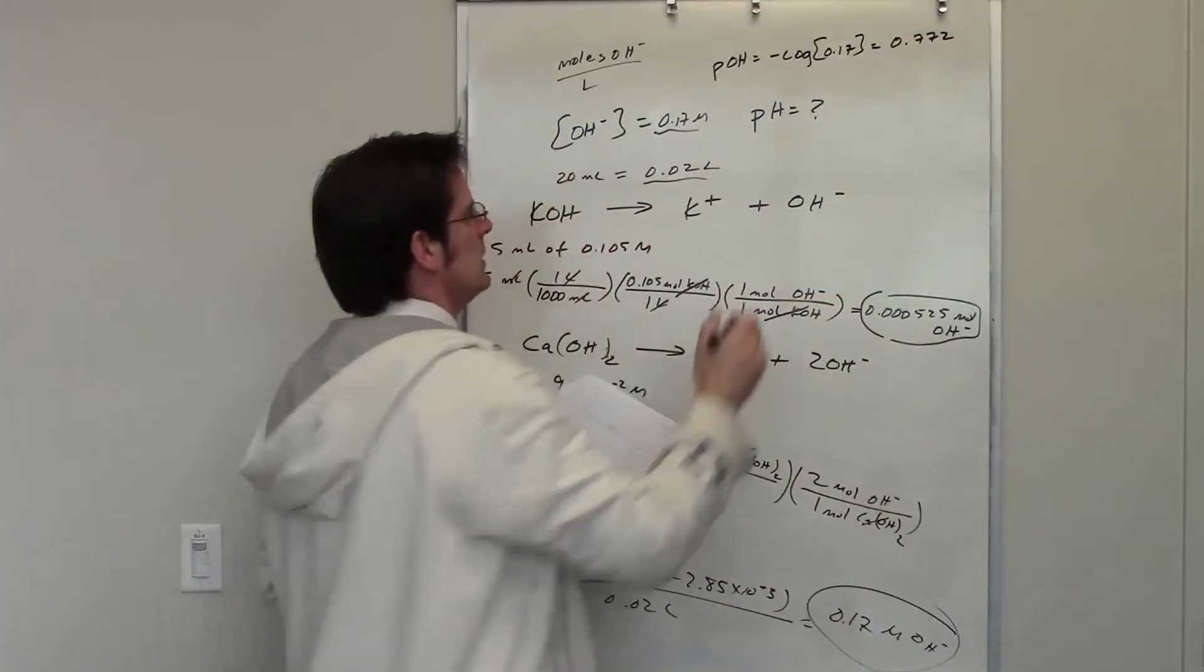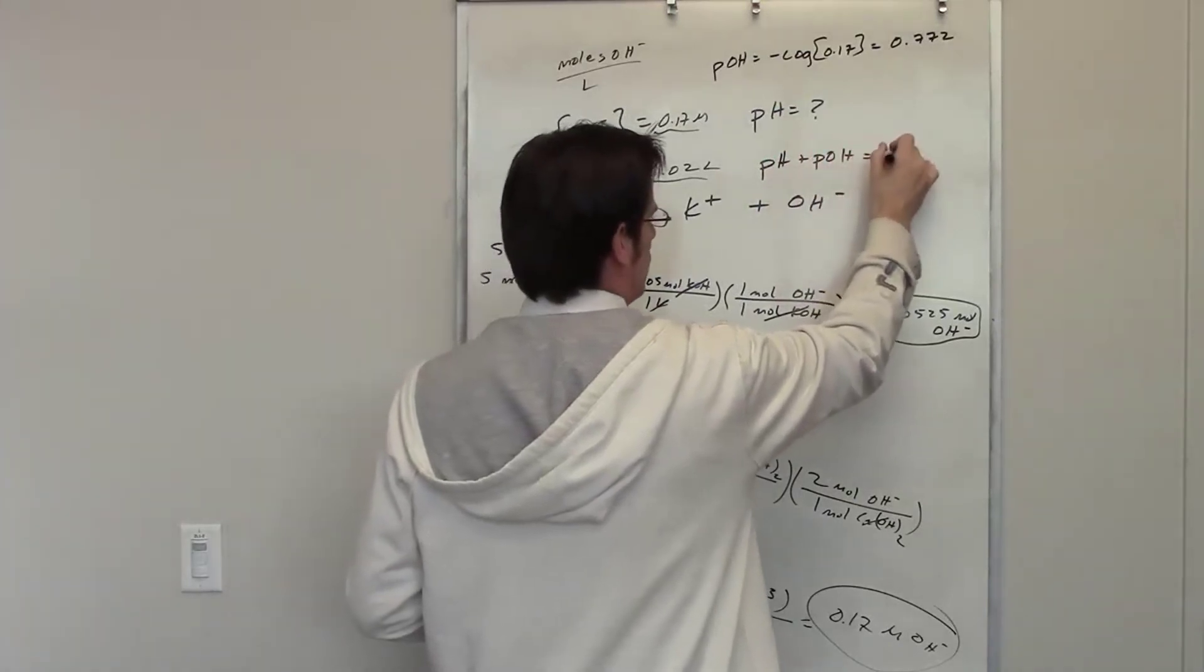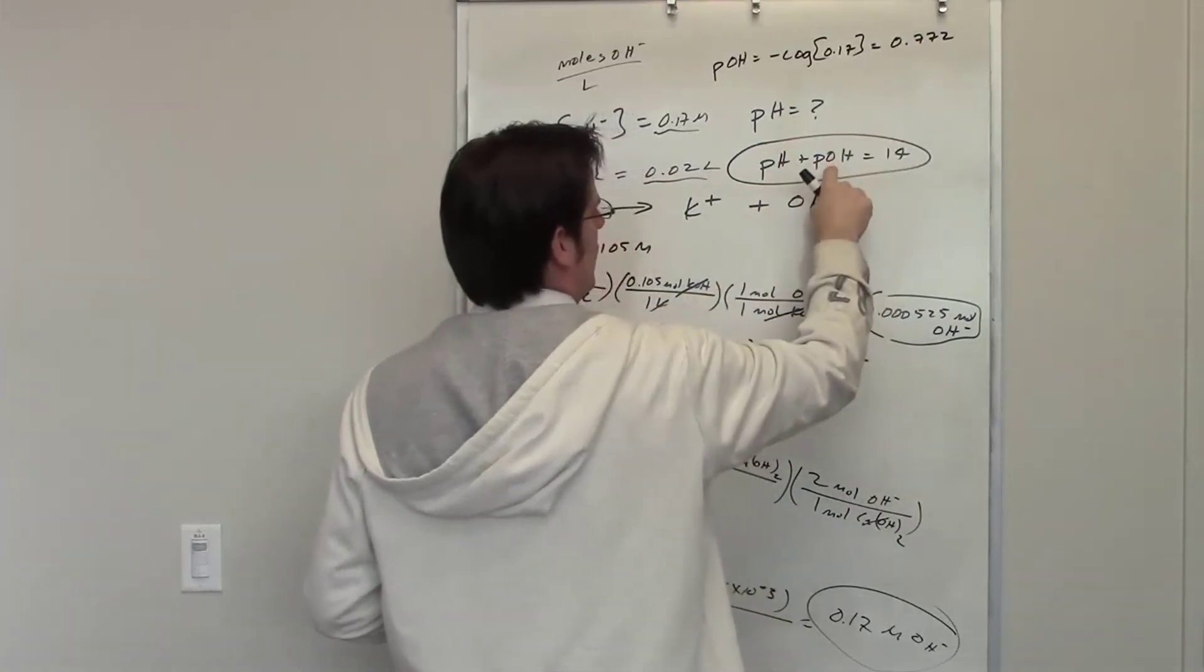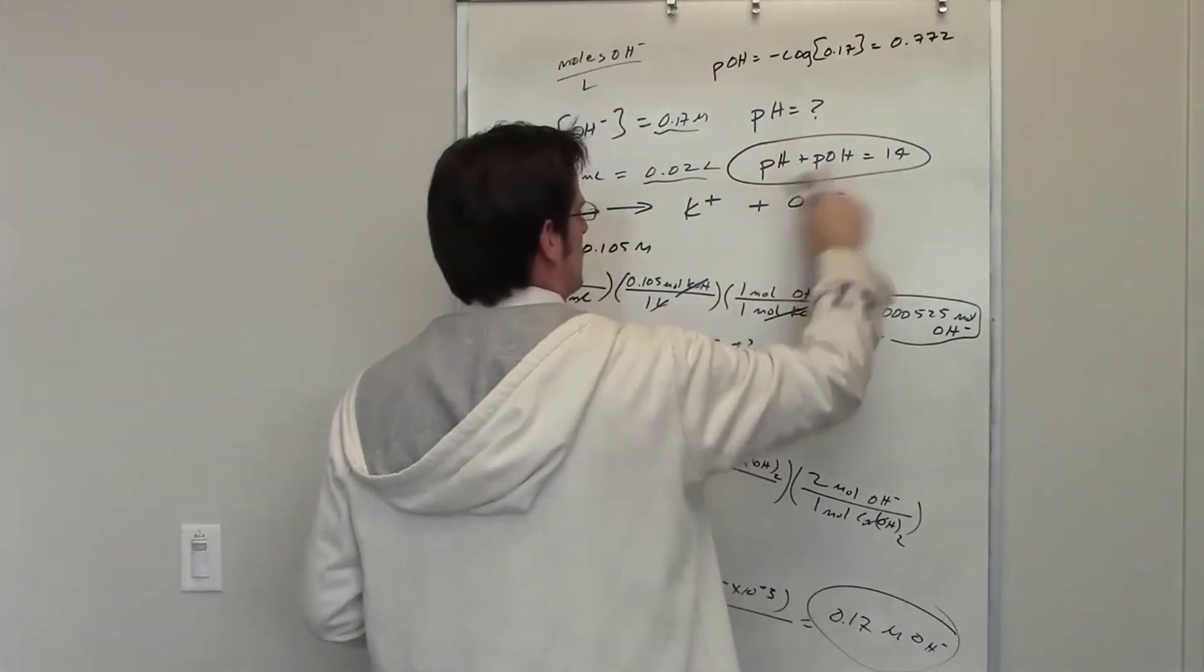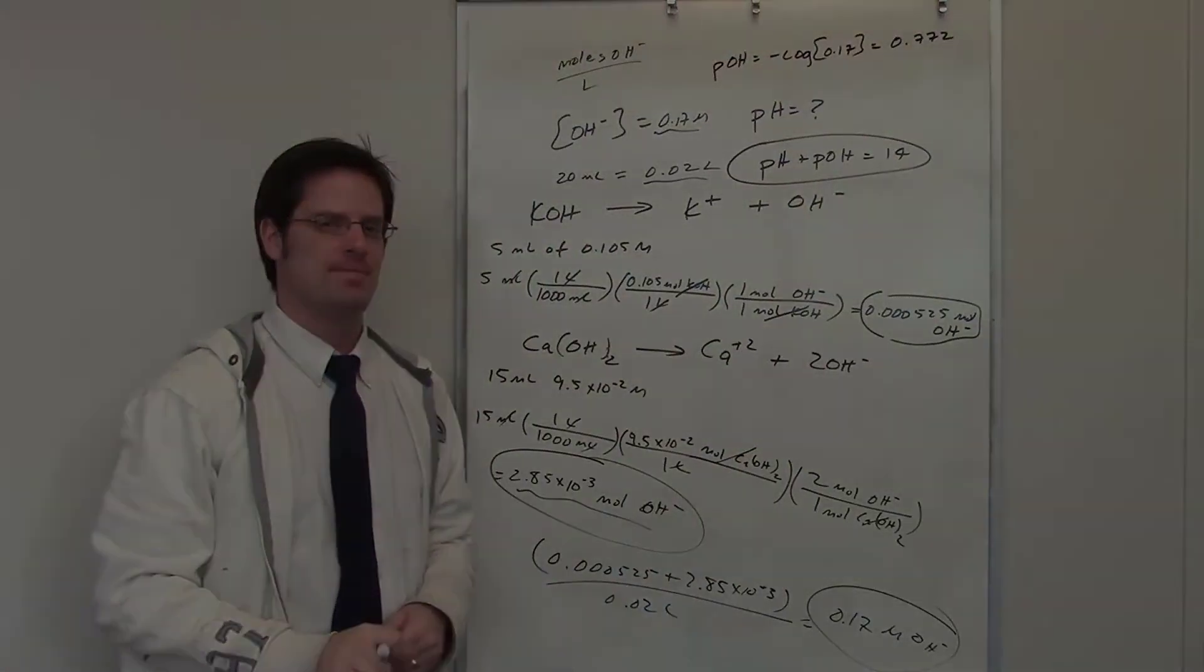What's the pH? Well, pH plus pOH are equal to 14. I take this number for pOH, I can throw it right in there, and then I can algebraically rearrange it to solve for pH, and that should give me the final answer.